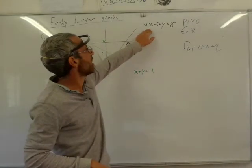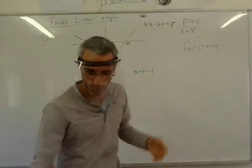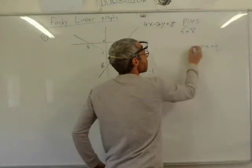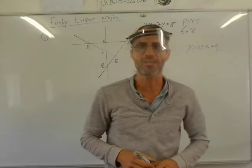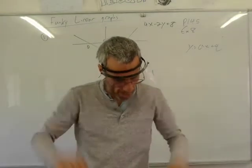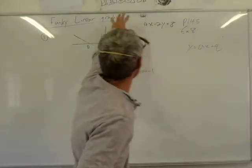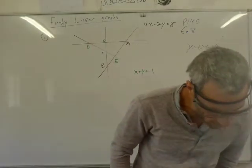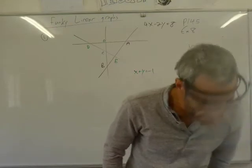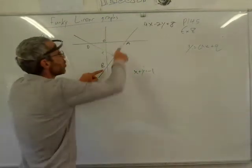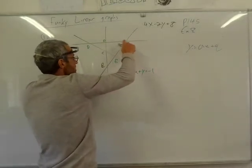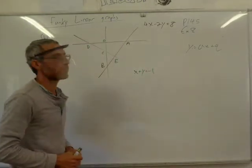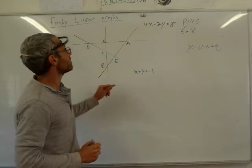Funky linear graphs are where, for example, you have 4x minus 2y equals 8 — it doesn't look like y = ax + q. So I've got these two graphs each with their own function, and they ask me to find the coordinates of A and B. The coordinates of A and B are basically the x-intercept and the y-intercept for this graph.